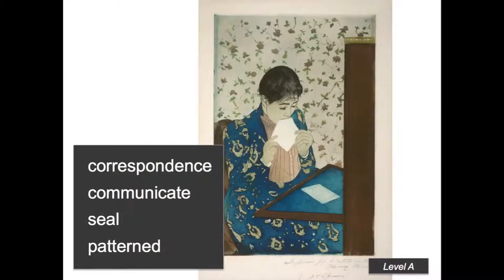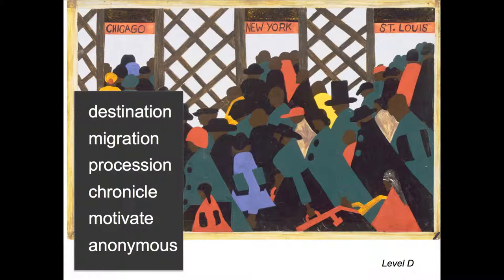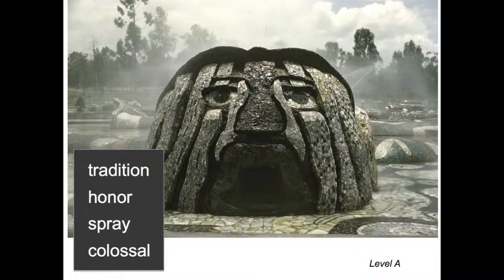Here is a Mary Cassatt from Level A. In Level A, there are four new vocabulary words introduced in each lesson. Levels B through D introduce six new words per lesson. Jacob Lawrence and Diego Rivera — what a great way to remember the word colossal. This truly is a colossal head.